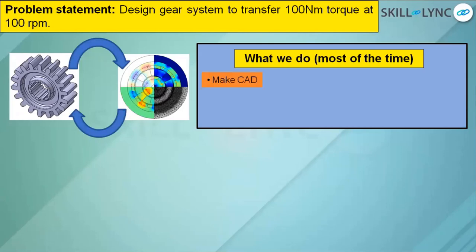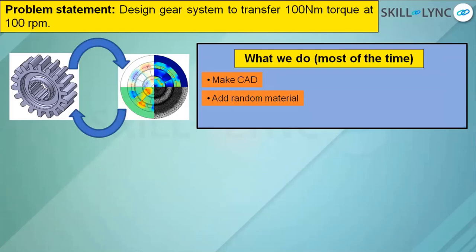Students will start by immediately making the CAD — take a spur gear, add some random material, say steel or aluminum or magnesium or dual-phase steel. There are a lot of materials in the library of CAD software such as SOLIDWORKS, CATIA, or NX. We randomly choose, thinking steel is the easiest — let's take steel. We just make the CAD and the profiles, matching them to the problem statement: 100 Newton meter of torque at 100 RPM.